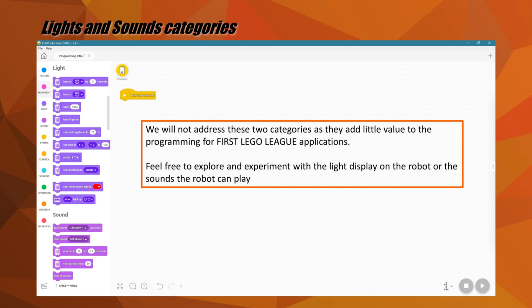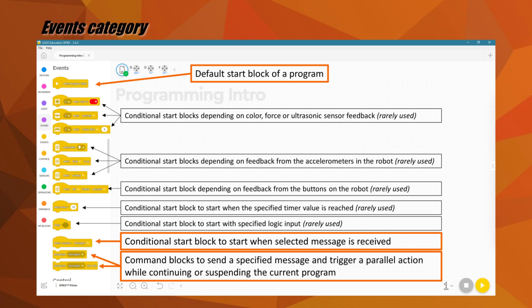The light and dark purple categories are the light and sounds group. We will not address these two categories as they add little value to programming for First LEGO League Challenge applications. Feel free to explore and experiment with the light display on the robot or the sounds that the robot can play.